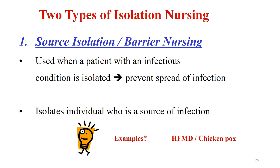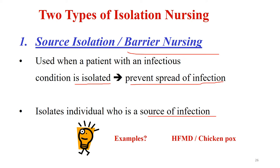There are two types of isolation nursing. The first is source isolation, also called barrier nursing. This is used when a patient with an infectious condition is isolated from the rest of the patients. For example, if someone has TB, you isolate the person who has tuberculosis from the rest of the people in the clinic or hospital to prevent the spread of infection. Here we are isolating the patient who is the source of infection from the rest of the patients. Another example is hand, foot, and mouth disease - you isolate the infected patient from the rest of the crowd. This is called source isolation.